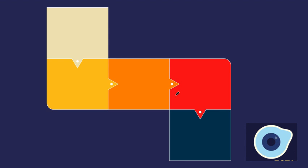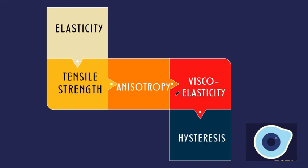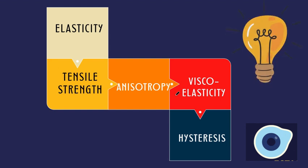The cornea possesses some really important biomechanical properties. In this video we will explore the key biomechanical properties: elasticity, tensile strength, anisotropy, viscoelasticity, and hysteresis — and how each one plays an important role in maintaining corneal shape and vision stability, and most importantly, how they connect directly to the pathophysiology of corneal ectasia.